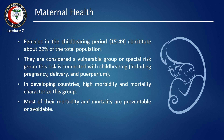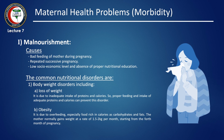Most of their morbidity and mortality are preventable or avoidable. Maternal health problems include two big categories: morbidity and mortality. We shall discuss first morbidity, including malnourishment, which is attributed to bad feeding of the mother during pregnancy, repeated successive pregnancies, low socioeconomic level, and absence of proper nutritional education.